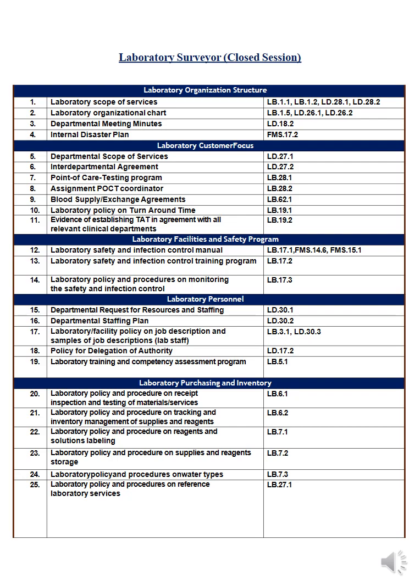Number twenty-two is the laboratory policy and procedure on reagent and solution labeling. Show me the policy and evidence that every single solution, reagent, and machine inside the lab is labeled. Number twenty-three is the laboratory policy and procedure on supplies and reagent storage: how to store, where to store, how much to store, what to do with the stored items, and what to do if there is a leak or spill.